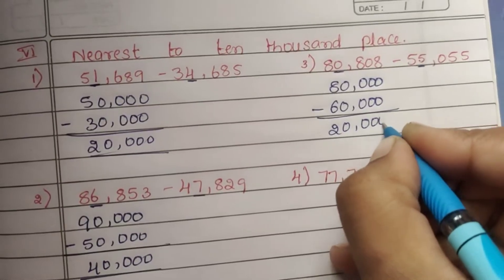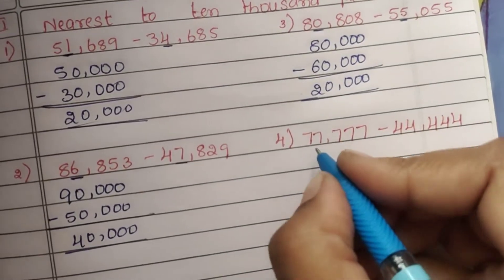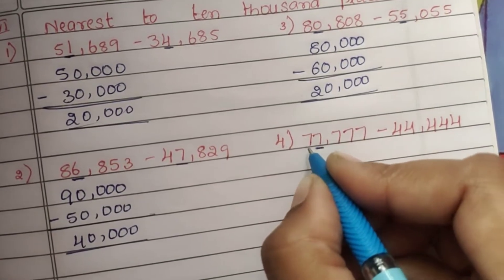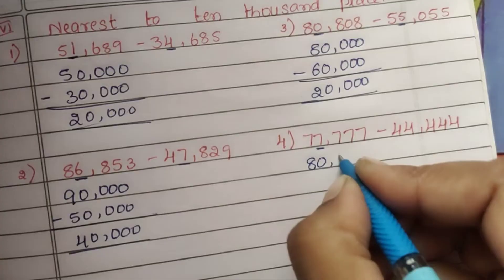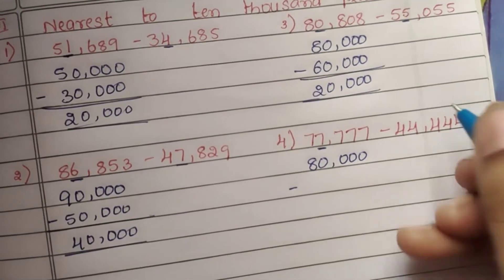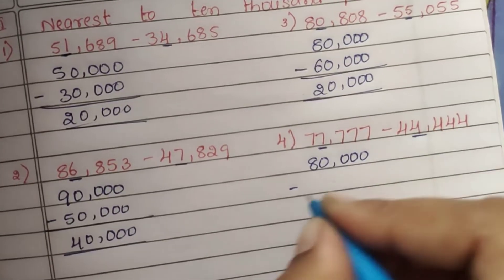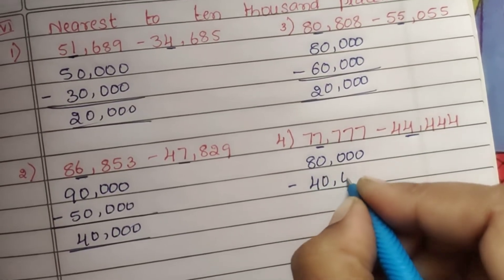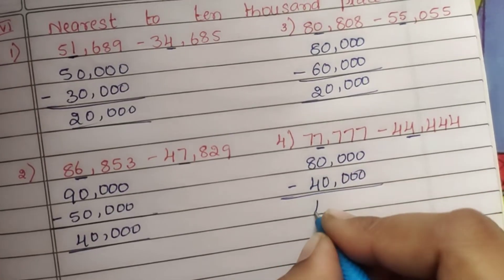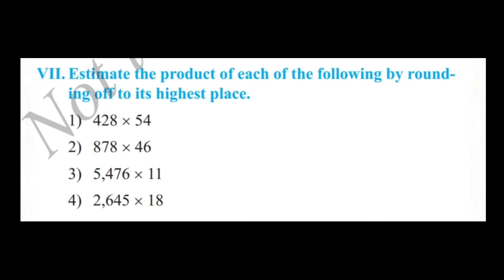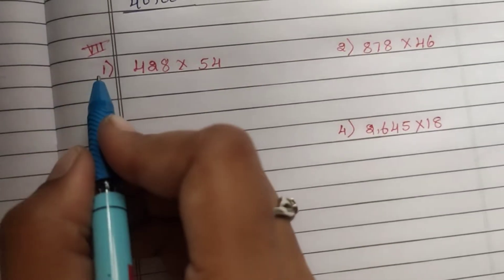Fourth question: 77,777 — digit 7 is greater than 5, so it rounds up to 80,000. Minus 44,444 — digit 4 is less than 5, so it stays 40,000. 8 minus 4 is 4. Answer is 40,000. Now seventh main: estimate the product of each of the following by rounding off to its highest place.